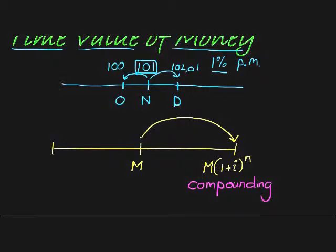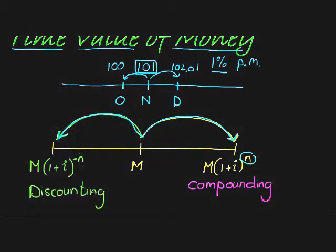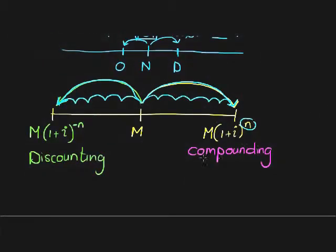Compounding is finding the future value of a certain present value. How about finding a past value? It's actually the same formula: (1 + i) to the power of n, but this time with negative n. This is called discounting, because in the past the value should be less due to interest. n tells me how many time periods I go into the future if positive, and into the past if negative. Going in the negative direction on the timeline I use negative n, and in the positive direction I use positive n.